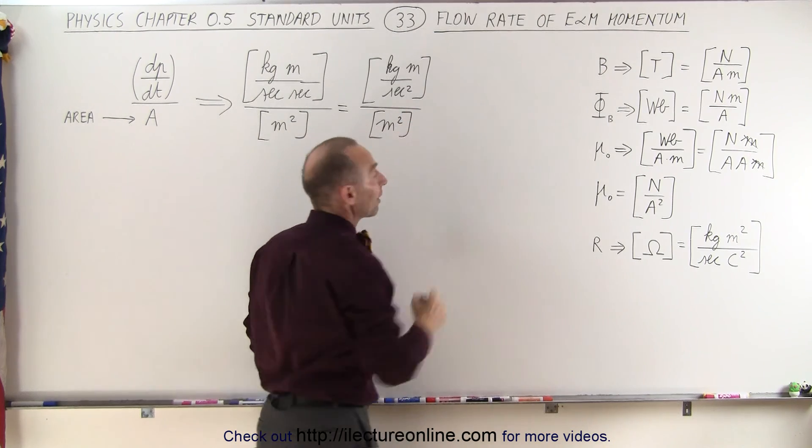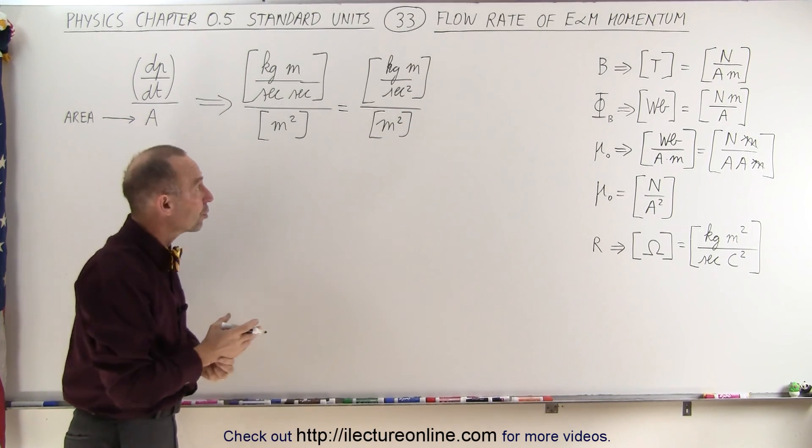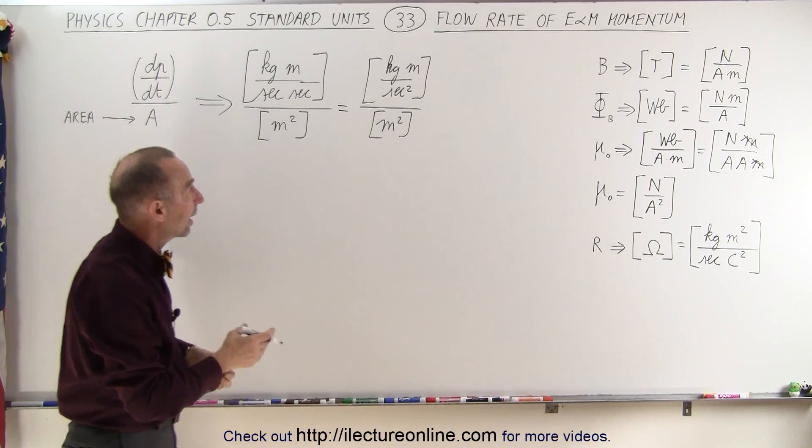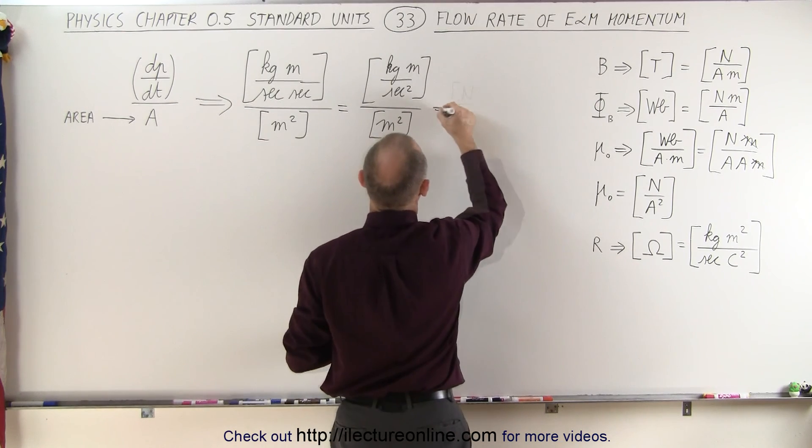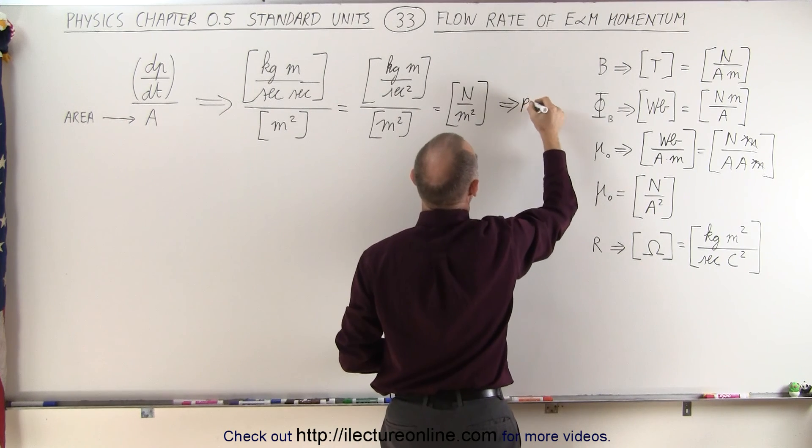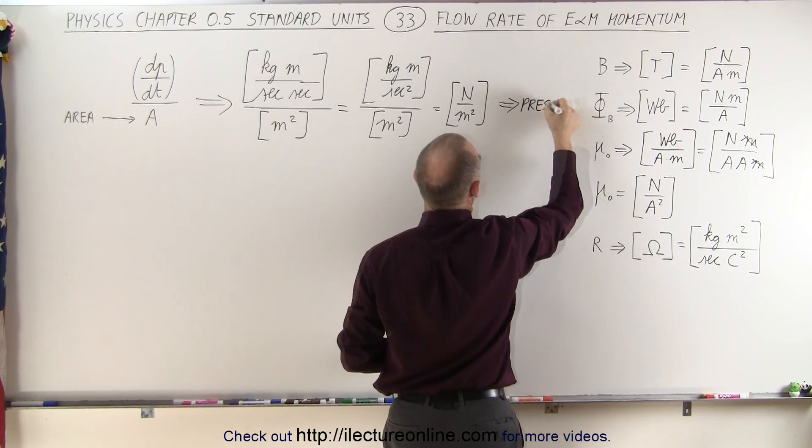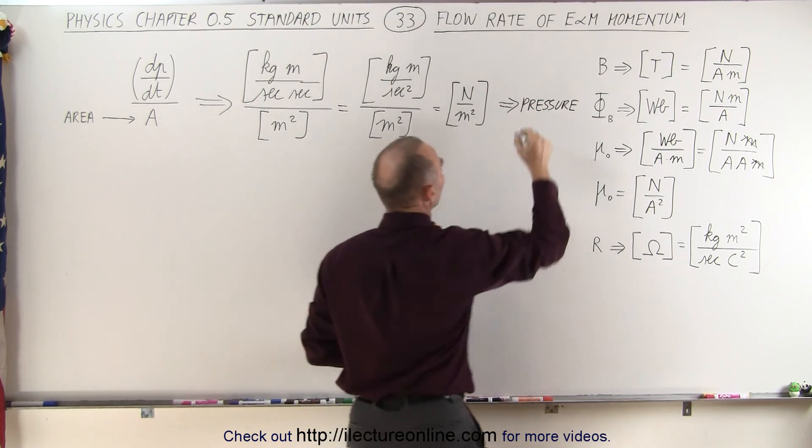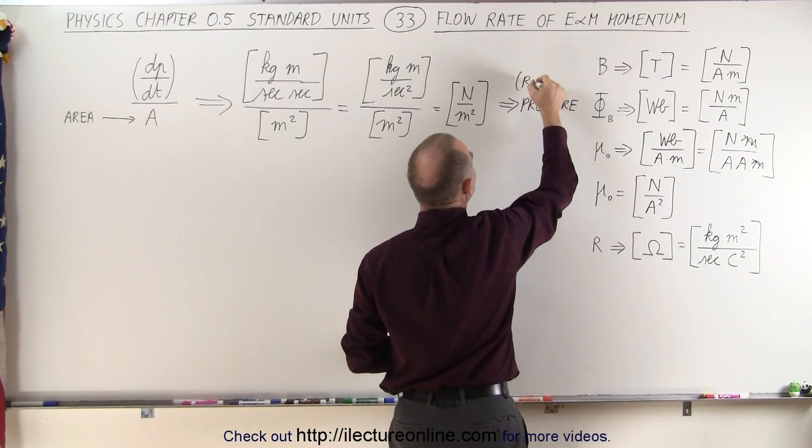Now of course, kilograms meters per second squared—that's the units for newtons. And so we have newtons per meter squared, which refers to pressure, or pascals. So this can be thought of as radiation pressure.